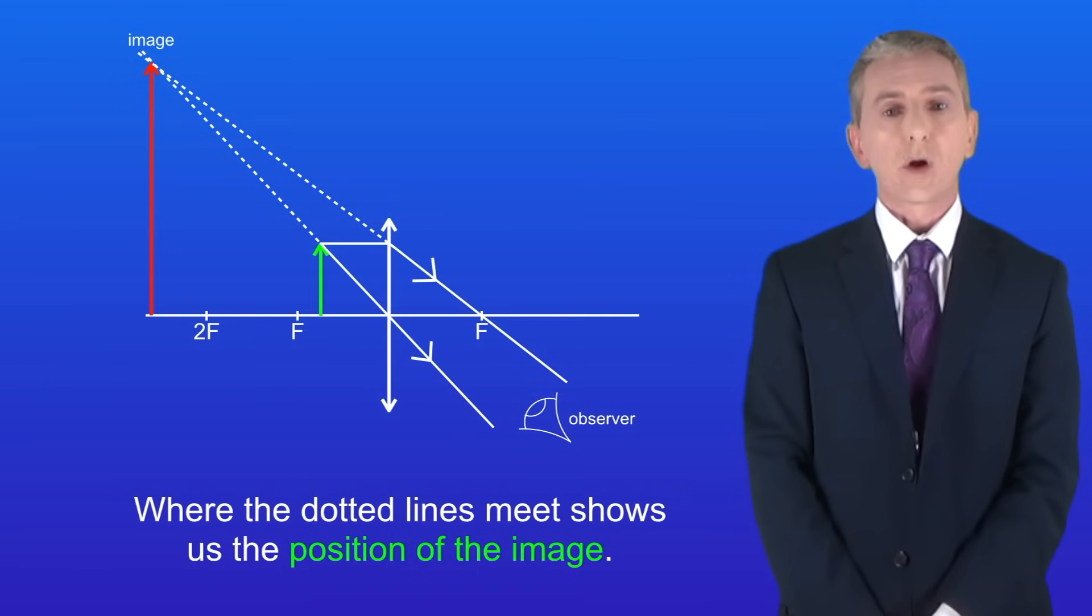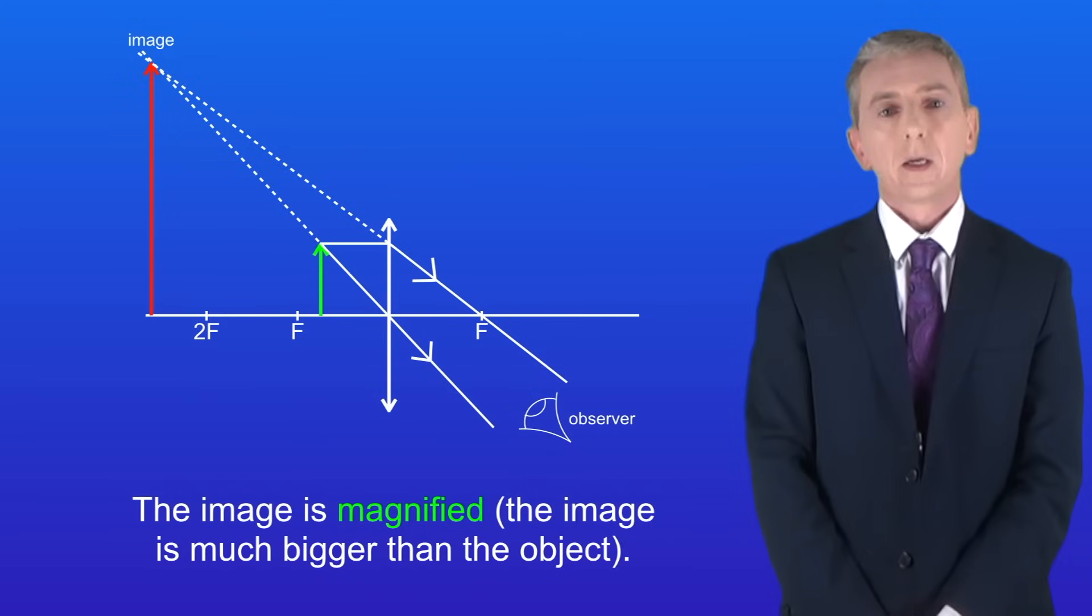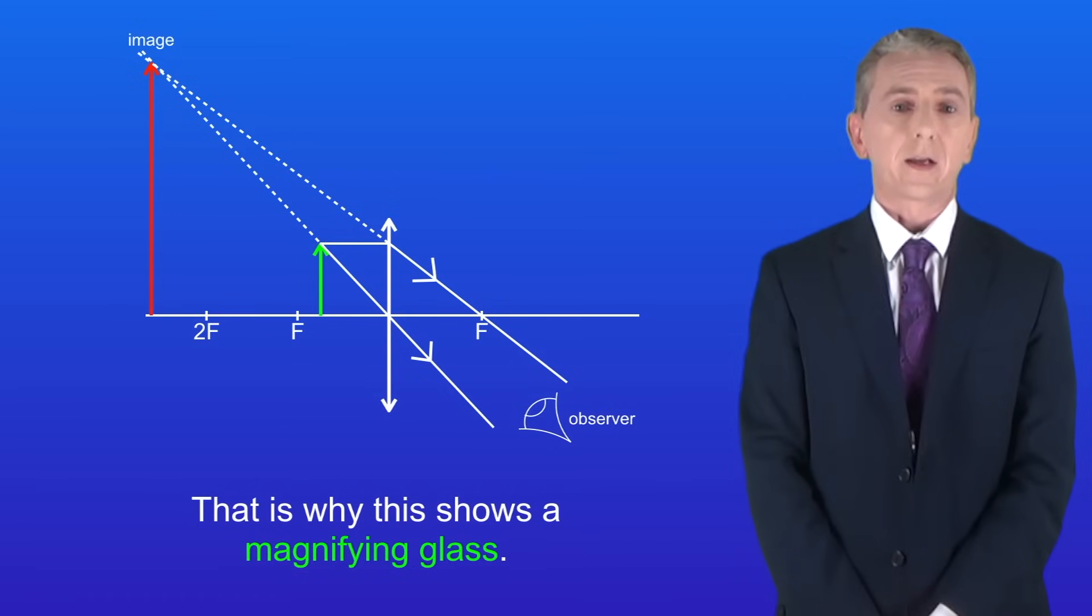Now this image has three key properties and I'd like you to try to work these out. So pause the video and try this yourself. Okay well firstly the image is magnified. As you can see the image is much bigger than the object and that's why this shows a magnifying glass.